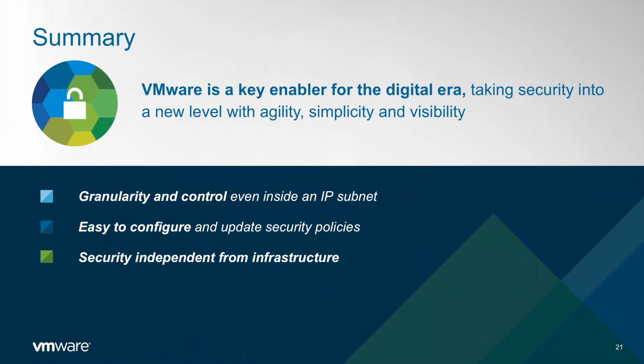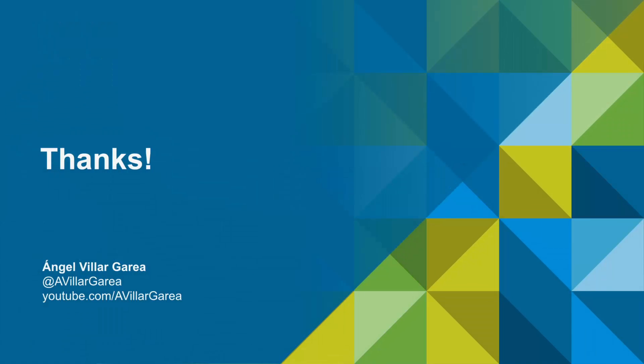This concludes the second video of the series. As a recap, we have seen how powerful the NSX model is — it allows granularity and control even inside IP subnets, filtering and deciding which traffic we want inside an IP subnet in a very easy way, because the NSX security model is independent from infrastructure. Thanks for watching — I hope you found the demo interesting, and don't forget to check my YouTube channel where all videos of this series will be uploaded.